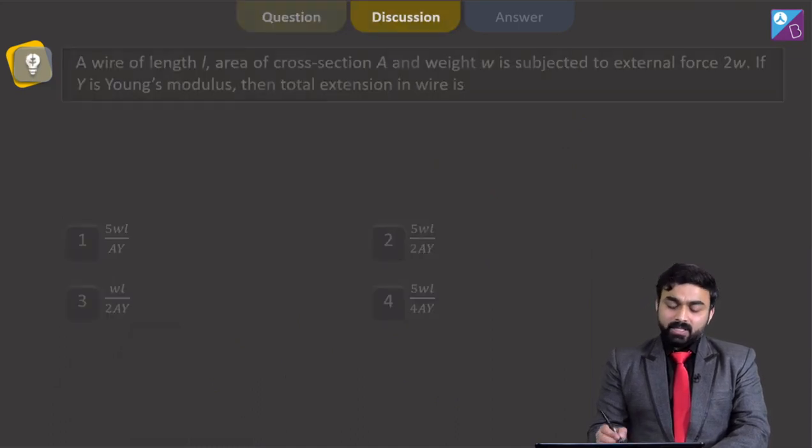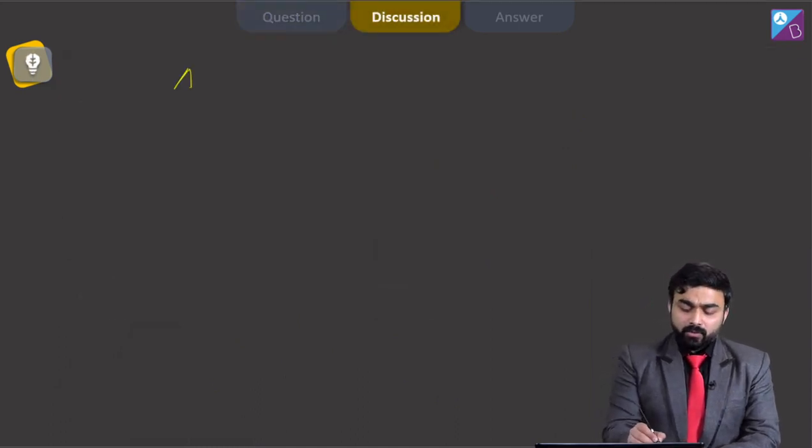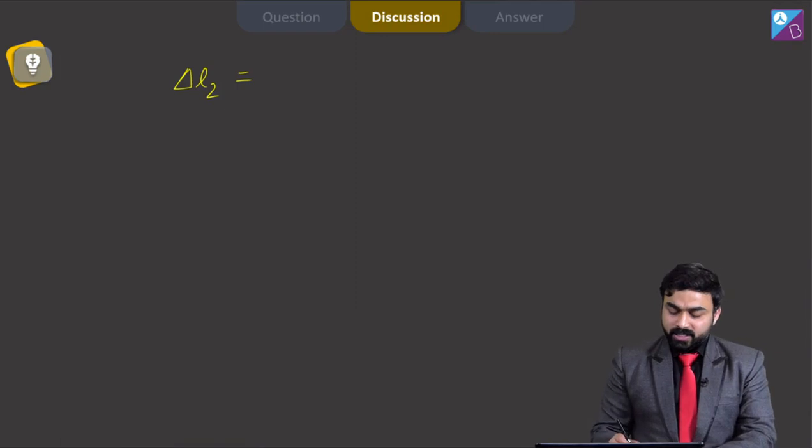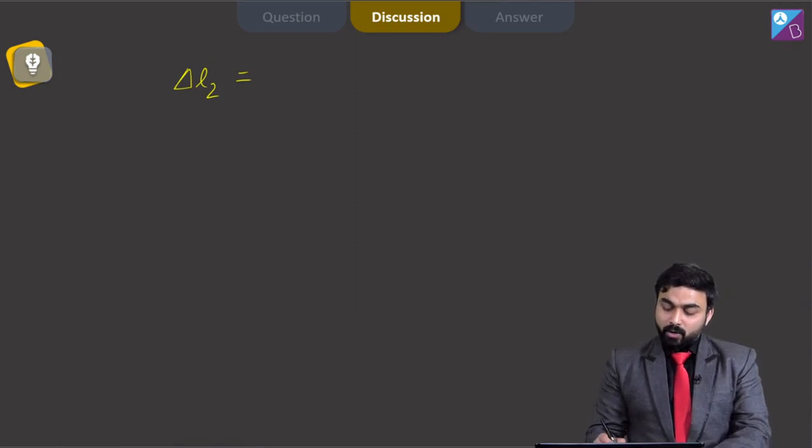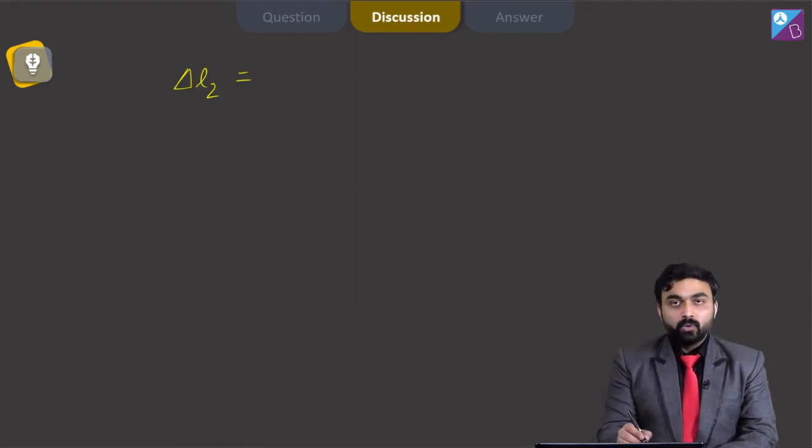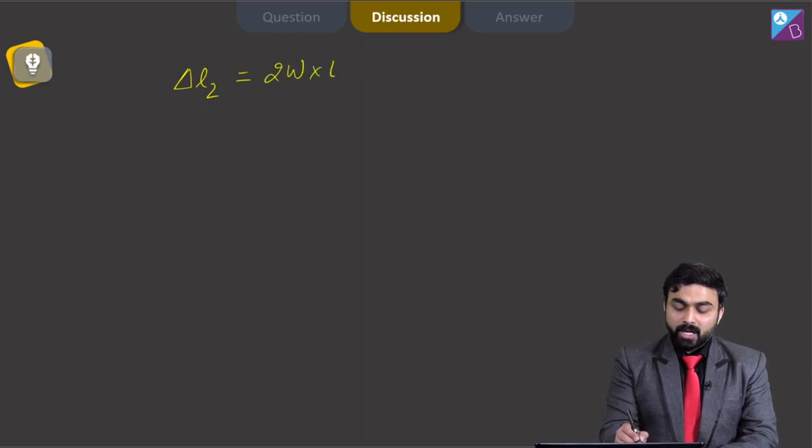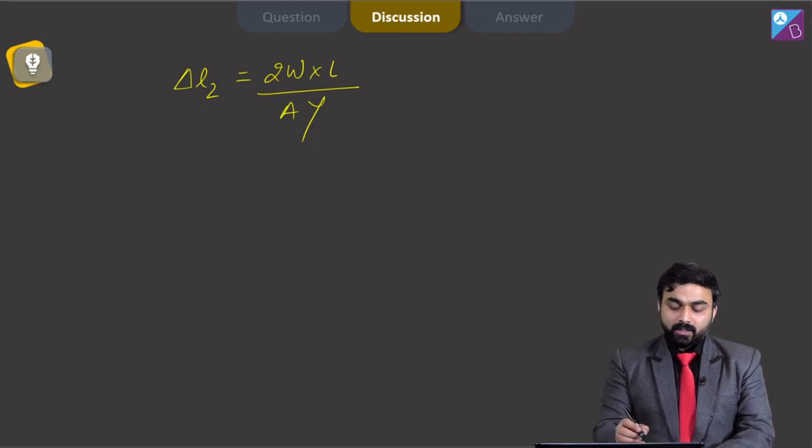In the same way, if I need to calculate the change in length of wire because of 2W weight, it would come out to be 2W into L over A into Young's modulus. Clear?